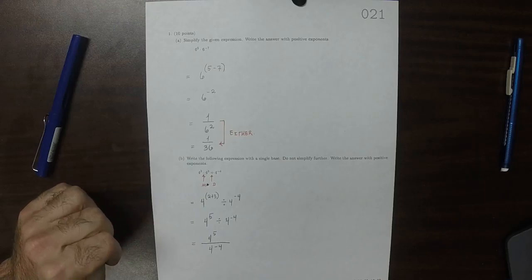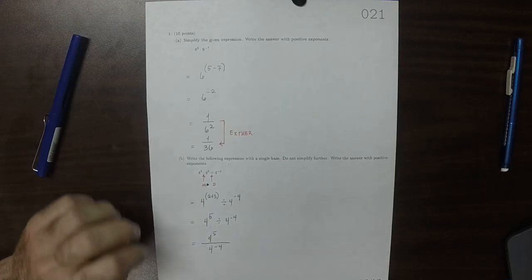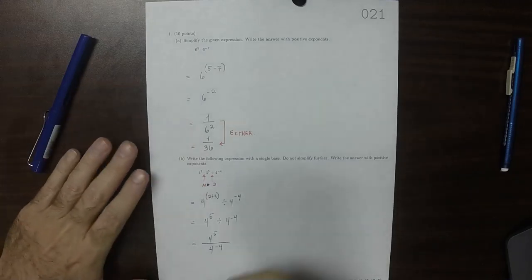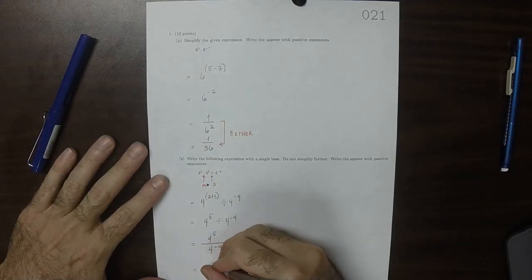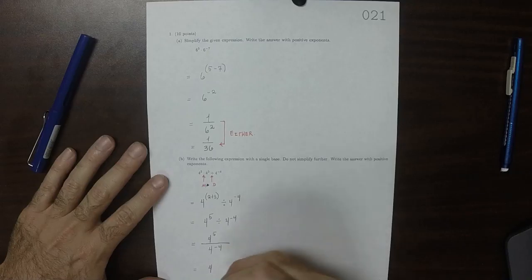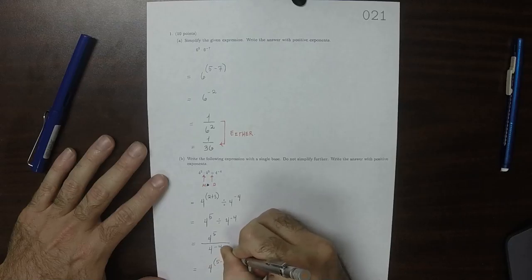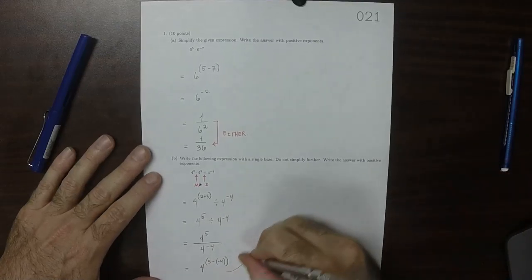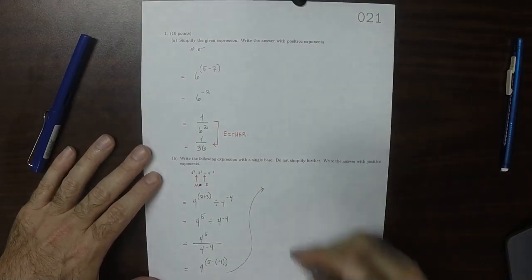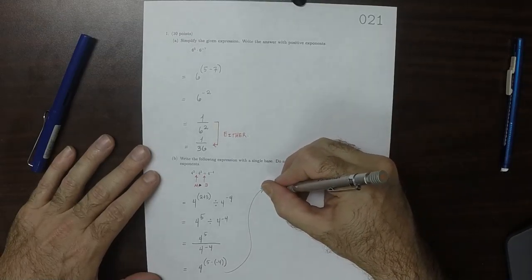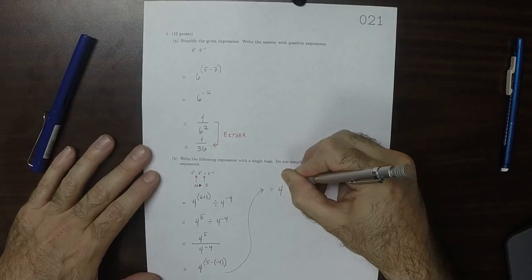And then recall that when you're dividing things of the same base, instead of adding the exponents, you subtract them. So this would be 4 to the new exponent, 5 minus negative 4. And then 5 minus negative 4 is 9. So that would be 4 to exponent 9.